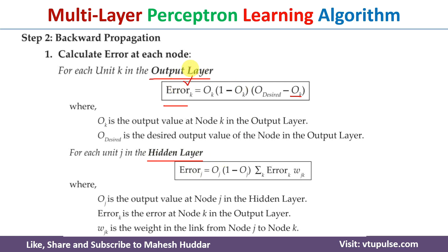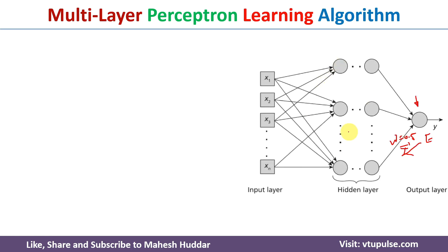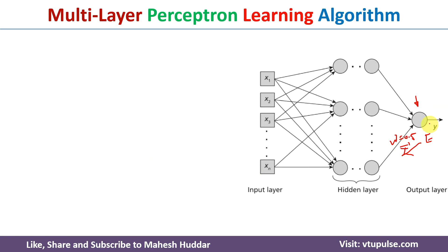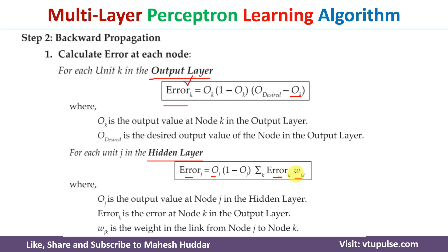The error at the hidden layer neuron is calculated by propagating the output layer error back. The formula is: error_j equals oj multiplied by (1 minus oj) multiplied by the summation of error_k times w_jk for all output layer neurons k. This means whatever error was calculated at the output layer neuron is propagated back in proportion to the weight: if weight equals 1, the entire error propagates back; if 0.5, then 50% propagates back; if 0.25, then 25% propagates back.